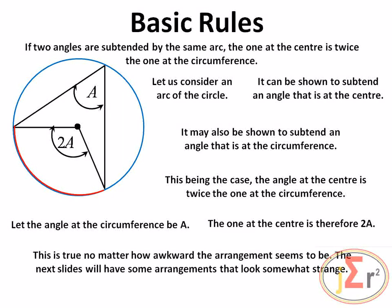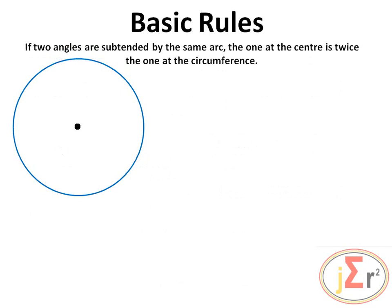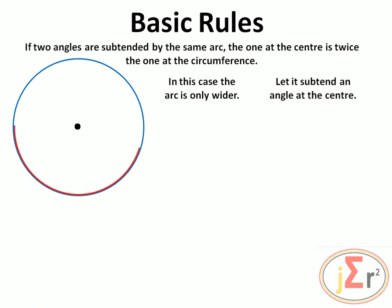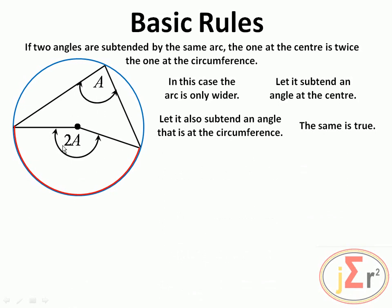This is true no matter how awkward the arrangement seems to be. The next slide will have some arrangements that look somewhat strange. If two angles are subtended by the same arc, the one at the center is twice the one at the circumference — this is the same rule we have looked at on the previous slide. In this case the arc is only wider, but the same rule applies: the one at the center is twice the one at the circumference. If the one at the circumference is A, the one at the center is 2A.